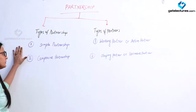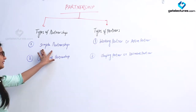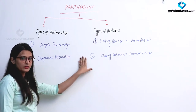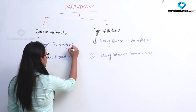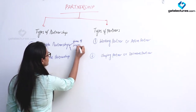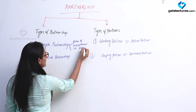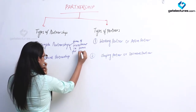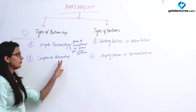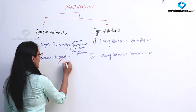There are basically two types of partnership: simple partnership and compound partnership. Simple partnership is that in which the time of investment is the same for all the partners. In compound partnership, the time of investment is not the same for all partners — the time is different for all partners.